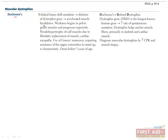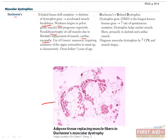Without dystrophin, there is muscle breakdown, which causes weakness beginning in the pelvic girdle muscles and progressing superiorly. These patients also get pseudohypertrophy of calf muscles due to fatty replacement of muscle tissue, and cardiomyopathy is common as well. The fatty replacement of muscle tissue can be seen in the image.